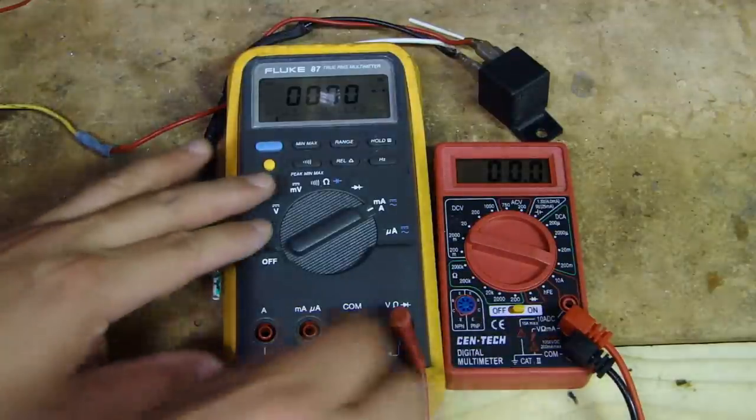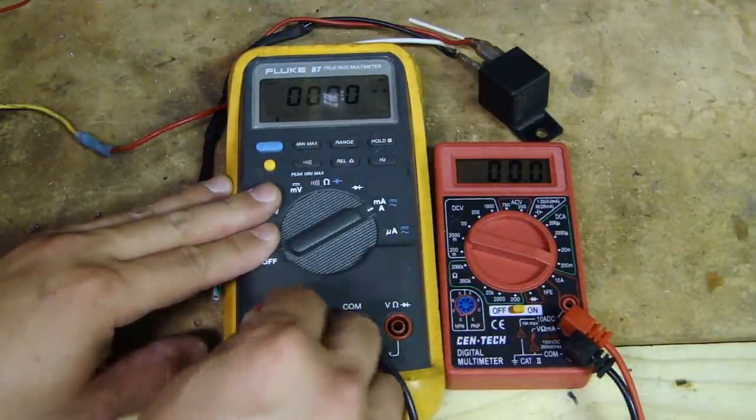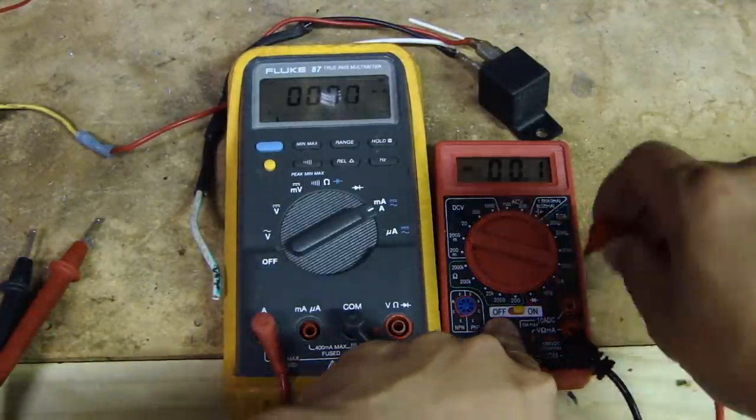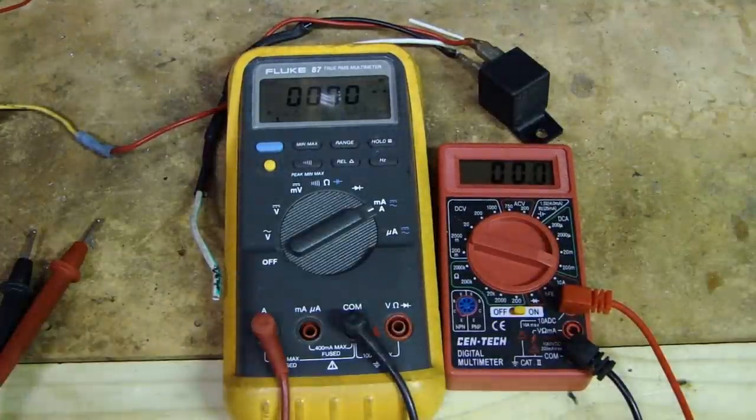So the next thing you need to do is move this probe over to the A. So take the positive probe and move it over to the A. Over here, you move this over to this one here that measures amp.